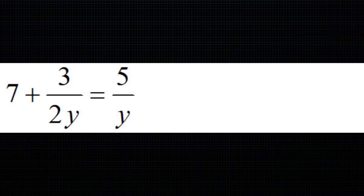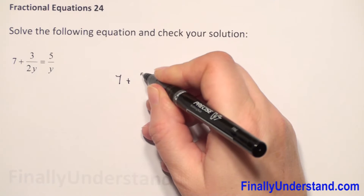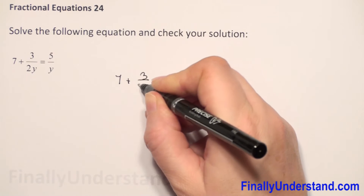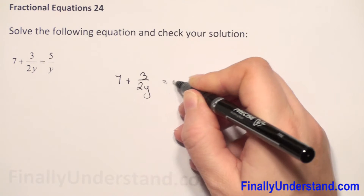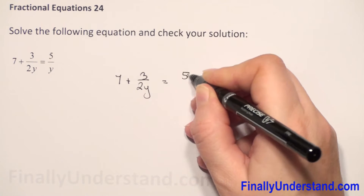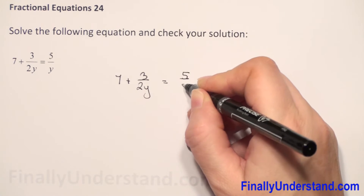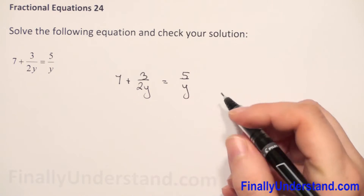We have a fractional equation. First let me copy our equation. We have 7 plus 3 over 2y is equal to 5 over y.